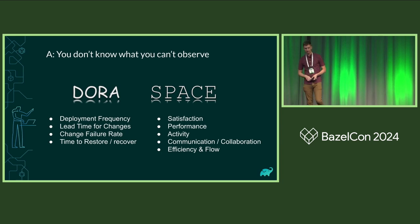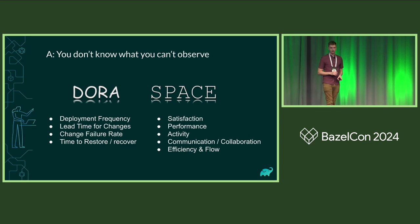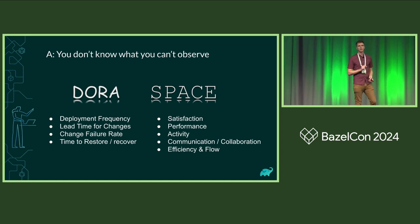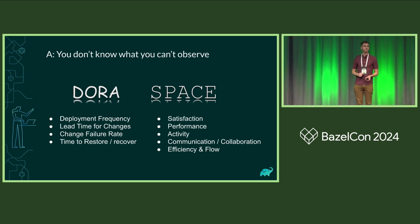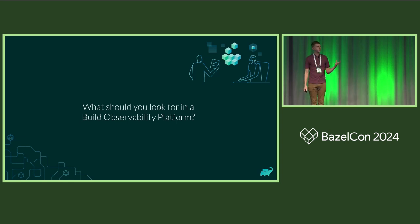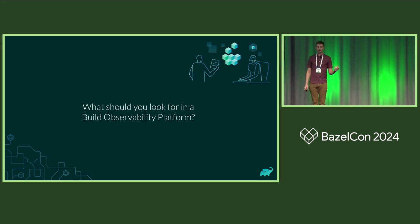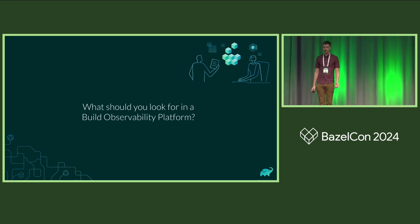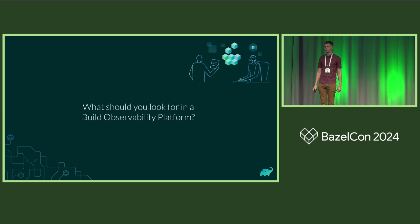DORA and SPACE are both there to help you decide what metrics you should be tracking to understand developer productivity and your release cycles. From there, you need to figure out how you're going to track those metrics and develop and acquire appropriate tooling that can help you make impactful decisions to move the needle in the right direction. This is where a good observability platform can come into play. Let me go through three sample questions where metrics and insights can help guide you to reduce your expensive build problems.